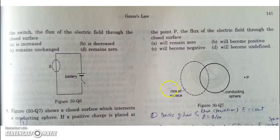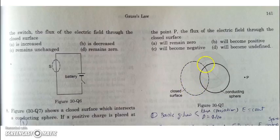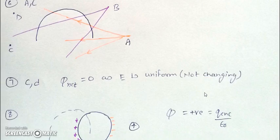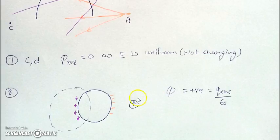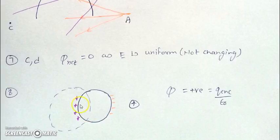In the next part, there is a conducting sphere and a positive point charge is placed near it. We have to find what is the flux through this closed Gaussian surface which encloses a portion of the conductor. As induction will take place on the conducting sphere, the nearer side will be negative and the far side will be positive. And as the Gaussian surface is at the back portion of the conducting sphere, it will enclose mostly positive charges. So the net flux will be positive. Thank you.